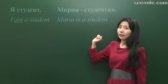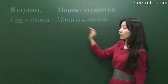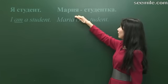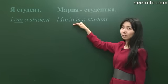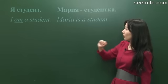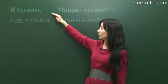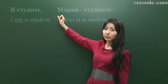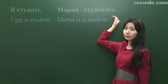Well, between two nouns, a dash can be put instead of the omitted verb. Мария студентка. Maria is a student. Well, студент is a word for a male student, and студентка is a female student.